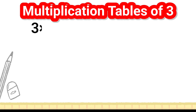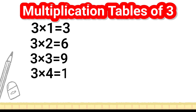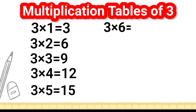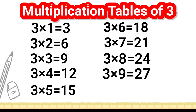3 1's are 3, 3 2's are 6, 3 3's are 9, 3 4's are 12, 3 5's are 15, 3 6's are 18, 3 7's are 21, 3 8's are 24, 3 9's are 27, 3 10's are 30.